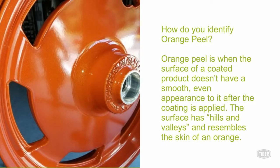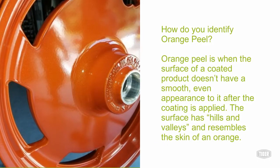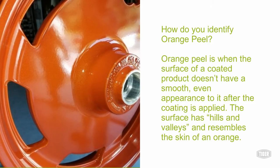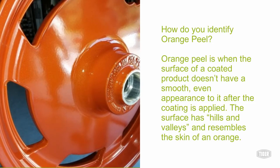How do you identify orange peel? Orange peel is when the surface of a coated product doesn't have a smooth, even appearance after the coating is applied. The surface has hills and valleys and resembles the skin of an orange.